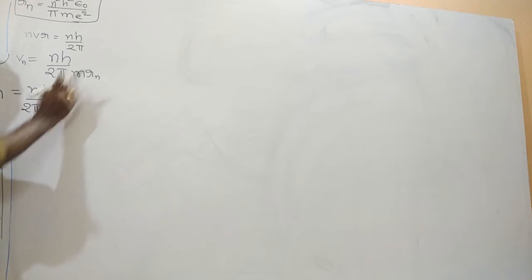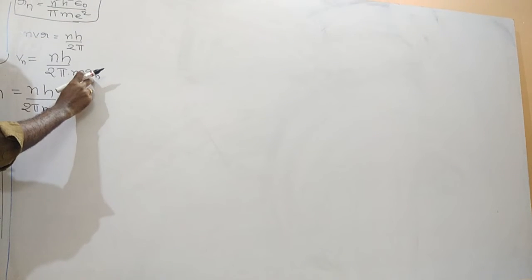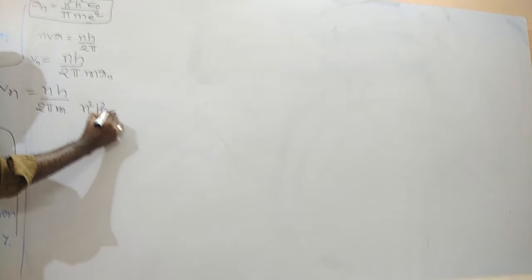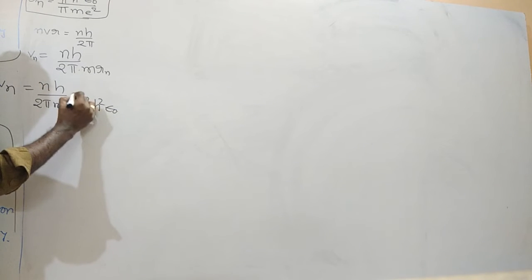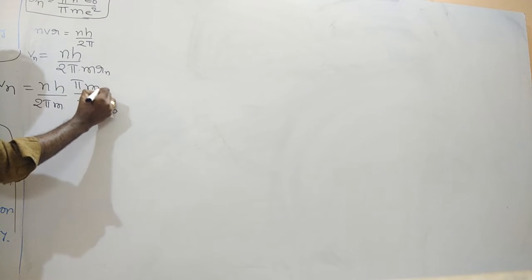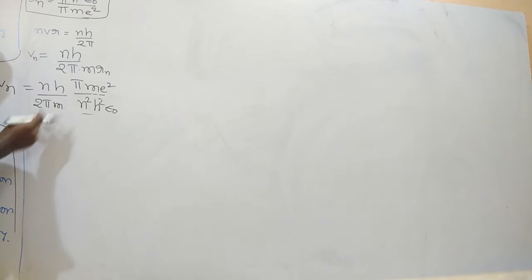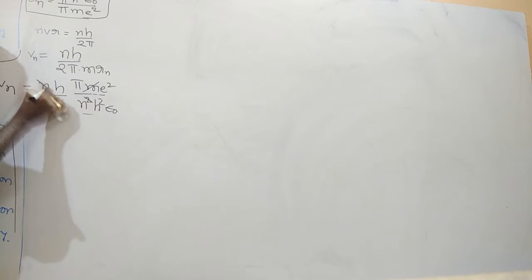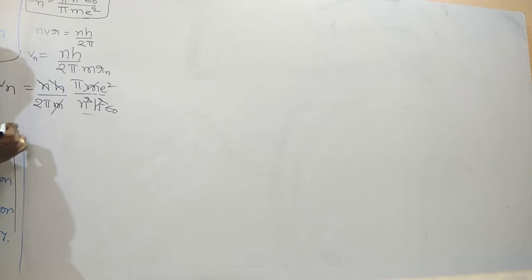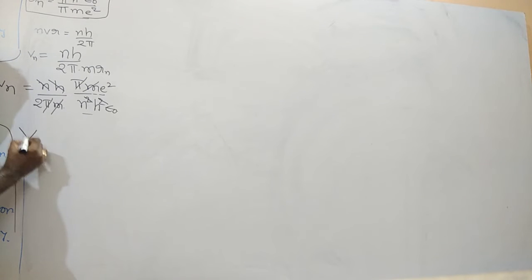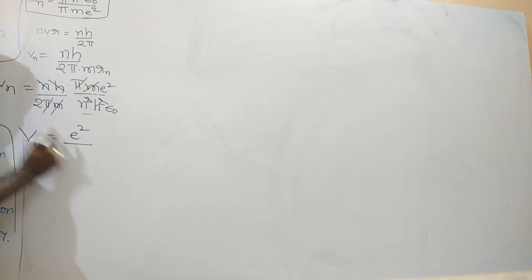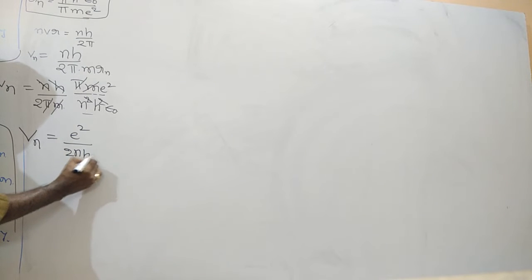Substituting rn = n² h² ε₀ / (π m e²) into the denominator, the expression becomes vn = nh / (2π m) × (π m e²)/(n² h² ε₀). Cancelling common terms — m cancels, one power of n cancels, h cancels, and π cancels — the velocity of the electron in the nth orbit simplifies to vn = e² divided by 2 n h ε₀.